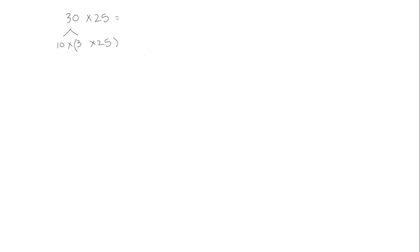We've done these area models before where one of the factors is a single digit, so let's write an area model for 3 times 25. One of our factors is 3. The second factor is 25 and we're going to decompose it by units — 2 tens is 20 plus 5 ones.